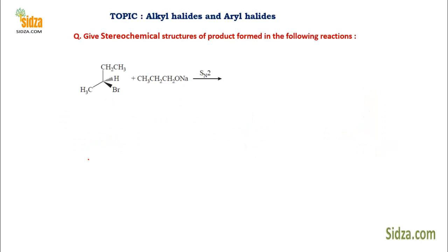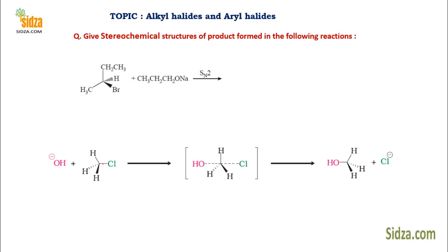In SN2 mechanism, there is complete inversion of configuration because no carbocation intermediate forms. In SN2, the nucleophile attacks from the backside of the leaving group at exactly 180 degrees to it. This forms a transition state where the carbon-chlorine bond starts breaking as the carbon-hydroxide bond starts forming. Finally, chlorine leaves and the three groups flip to the other side — complete inversion of configuration.